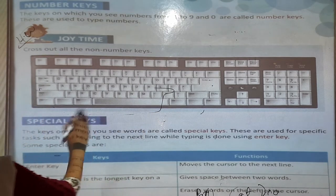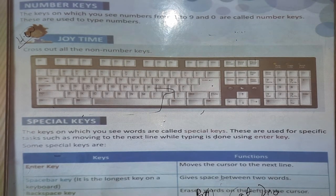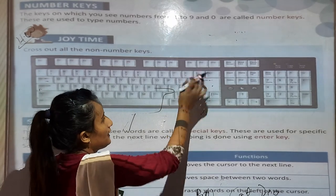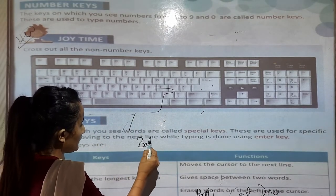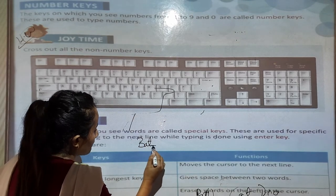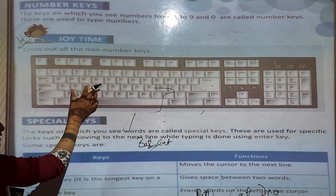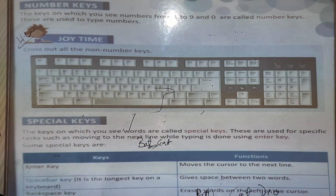Special keys: the keys on which you see words are called special keys. These are used for specific tasks — such as moving to the next line while typing, which is done using the enter key. Space bar gives a space between words. With the help of backspace, you can erase letters. So with alphabet keys you write words, with number keys you write numbers, and with special keys you can enter, space, or erase.